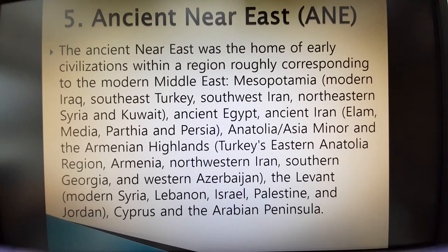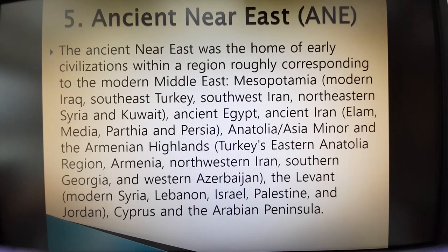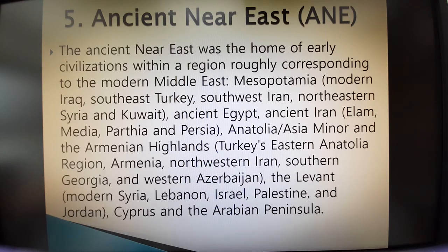The Ancient Near East was the home of early civilizations within a region roughly corresponding to the modern Middle East: Mesopotamia (modern Iraq), Turkey, Iran, Syria, Kuwait, ancient Egypt, ancient Iran, Anatolia (Asia Minor), the Armenian Highlands, Turkey's eastern Anatolia region, Armenia, northwestern Iran, southern Georgia, and western Azerbaijan. The Levant — modern Syria, Lebanon, Israel, Palestine, Jordan, Cyprus, and the Arabian Peninsula — is also included in the term Ancient Near East.